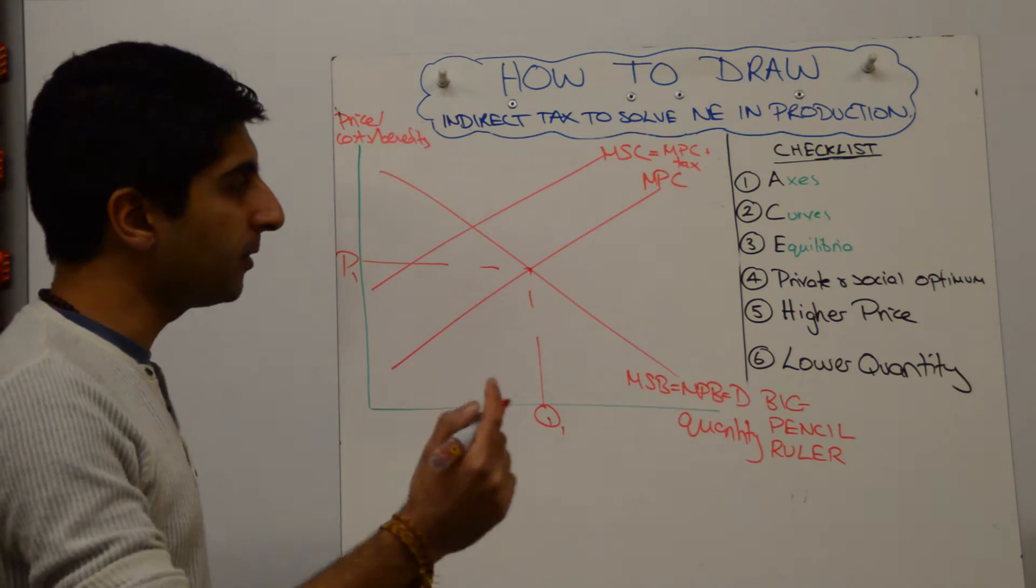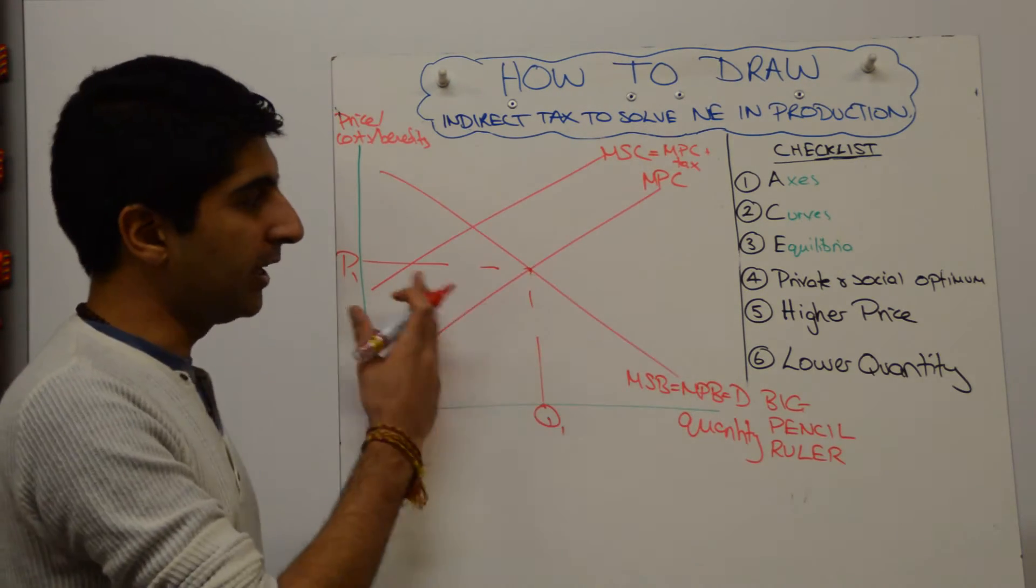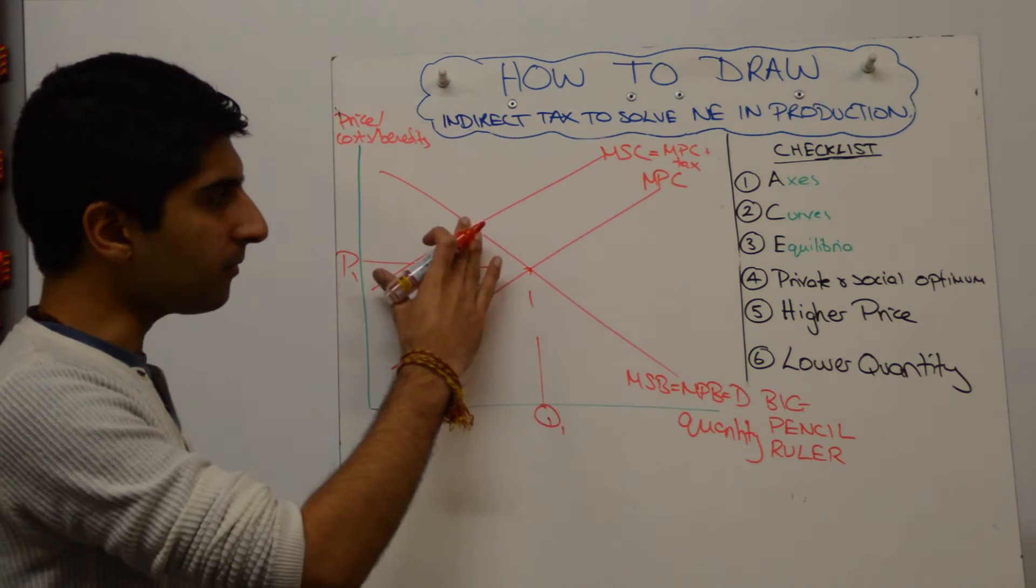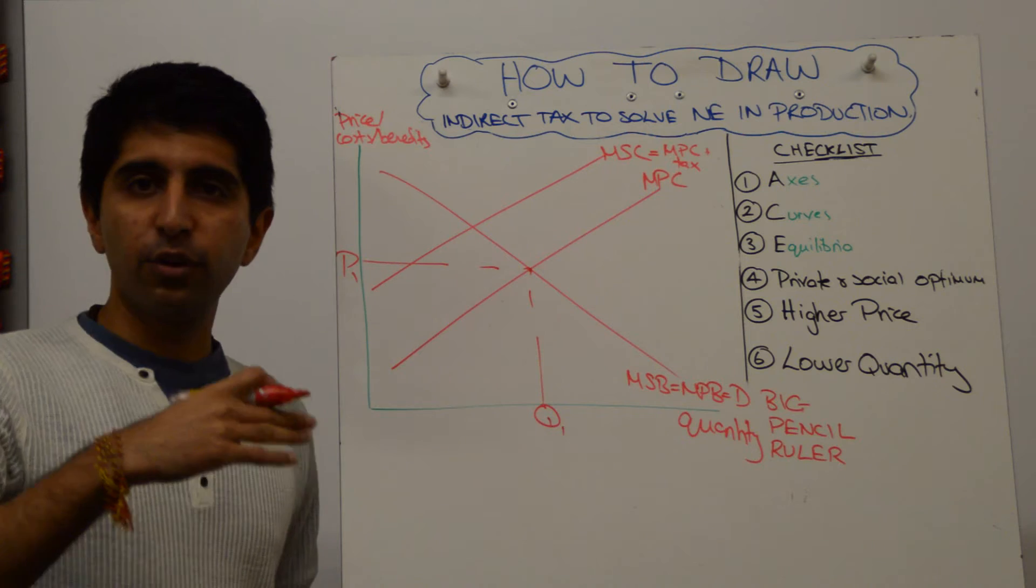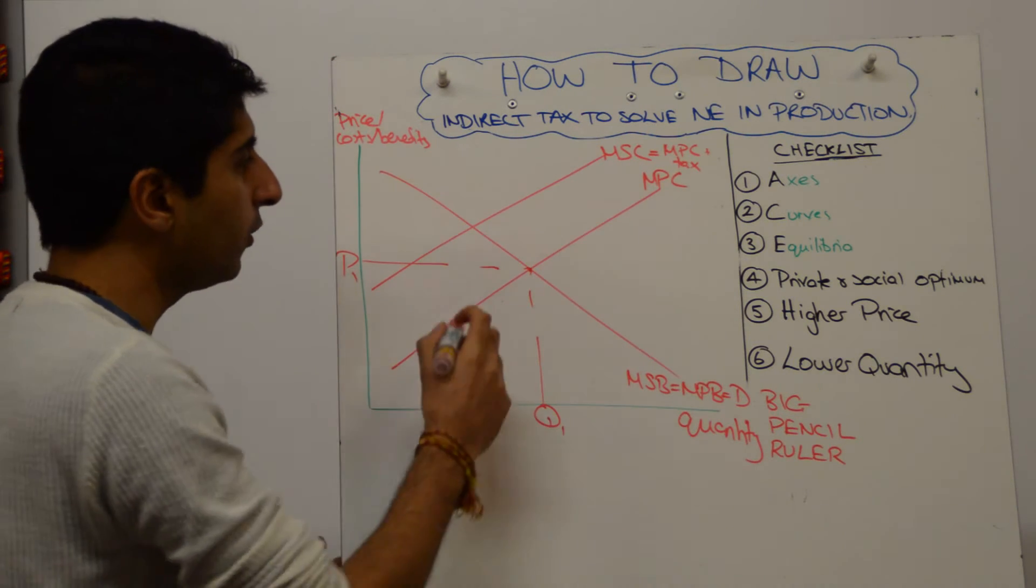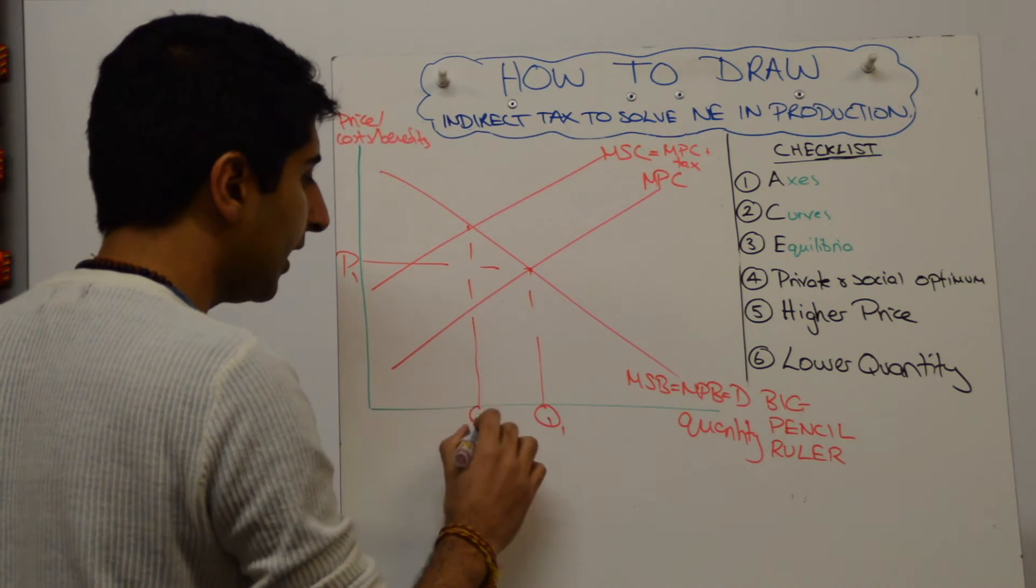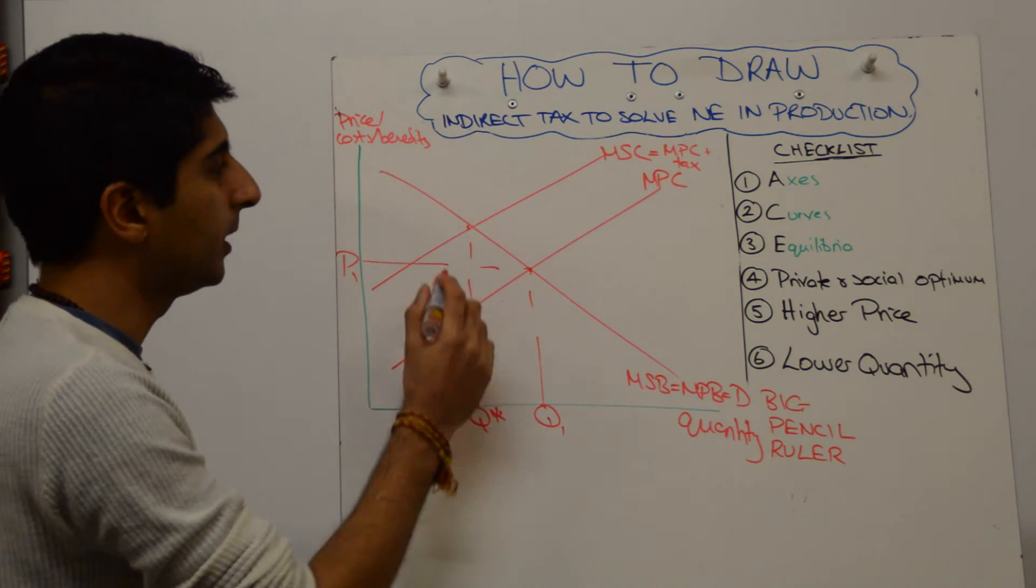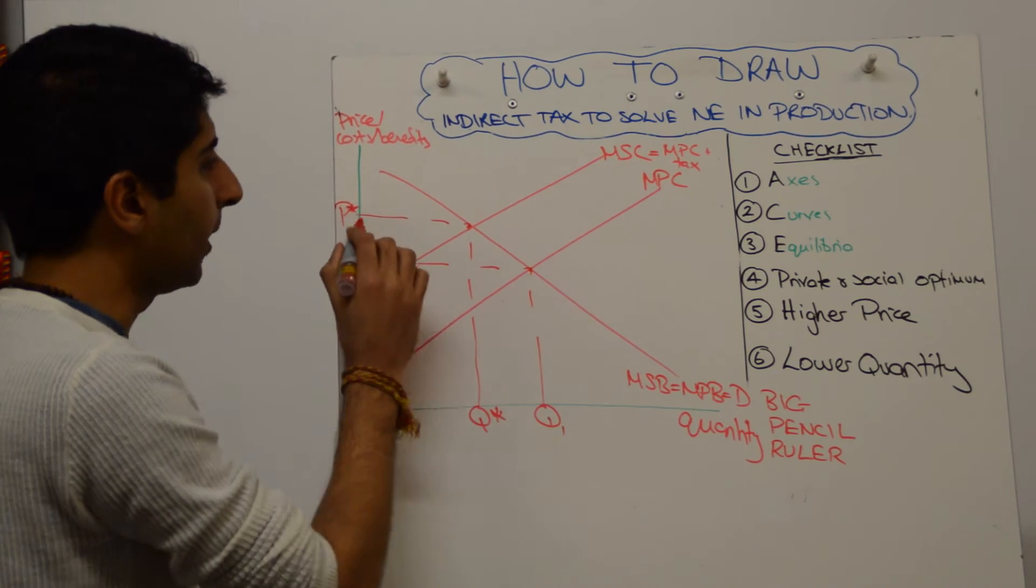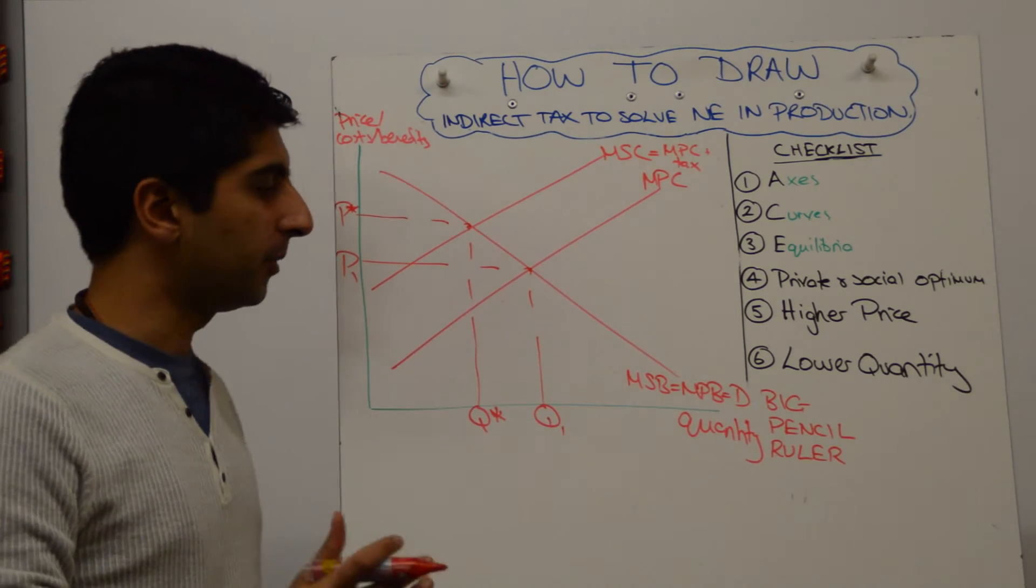Now, label your equilibrium. I've already labeled the initial private optimum. If you want to label the social optimum with stars, you can do. If you want to do P2, Q2, you can do whatever you want. Just to make it clear that we are now at the social optimum, I'm going to label that Q star and P star, because that is exactly the social optimum.